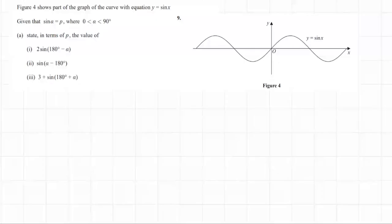Right, Figure 4, which is this over here, shows a part of the graph of the curve of the sine graph, y equals sine x. So it's just a normal sine graph, no adjustments have been made to it. It's given that sine a equals p, and a is between 0 and 90 degrees.